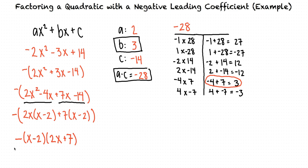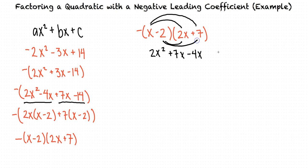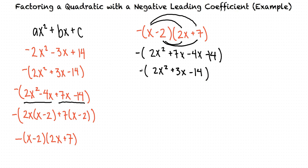To make sure this factorization is correct, we can multiply out the two factors to see if we get the original quadratic expression. Using the FOIL method: x times 2x gives 2x squared, x times 7 gives 7x, negative 2 times 2x gives negative 4x, and negative 2 times 7 gives negative 14. We still have the negative out front. Adding 7x and negative 4x gives 2x squared plus 3x minus 14 with a negative out front. Distributing the negative gives negative 2x squared minus 3x plus 14, which matches our original expression, so we know the factors are right.